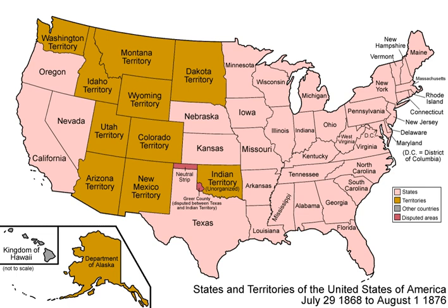Five of the territories are permanently inhabited and are classified as unincorporated territories. They are American Samoa, Guam, the Northern Mariana Islands, Puerto Rico and the U.S. Virgin Islands. The other 11 territories are small islands, atolls, and reefs with no native or permanent population.